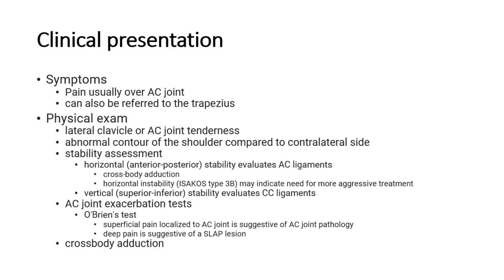For stability assessment, horizontal anterior-posterior stability evaluates the AC ligaments, while vertical superior-inferior stability evaluates the CC ligaments. There are also AC joint exacerbation tests like the O'Brien's test, where superficial pain localized to the AC joint is suggestive of AC joint pathology, and deep pain is suggestive of a SLAP lesion.